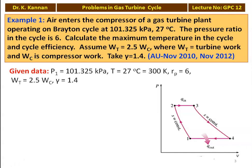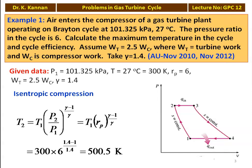1 to 2: isentropic compression; 2 to 3: constant pressure heat addition; 3 to 4: isentropic expansion; 4 to 1: constant pressure heat rejection. For the isentropic compression process, we calculate the temperature after compression. T2 = T1 × (P2/P1)^((γ-1)/γ) = T1 × Rp^((γ-1)/γ). Substituting: 300 × 6^((0.4/1.4)) = 500.5 K.